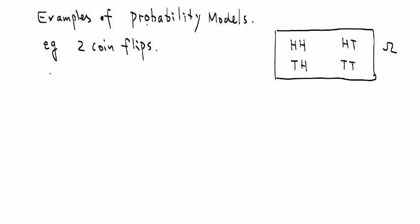We also need the P, which is the probability assignment. Let's say probability of head-head is equal to one quarter. Let's say that's also equal to probability of head-tail. Every one of these four outcomes are equal to one quarter.